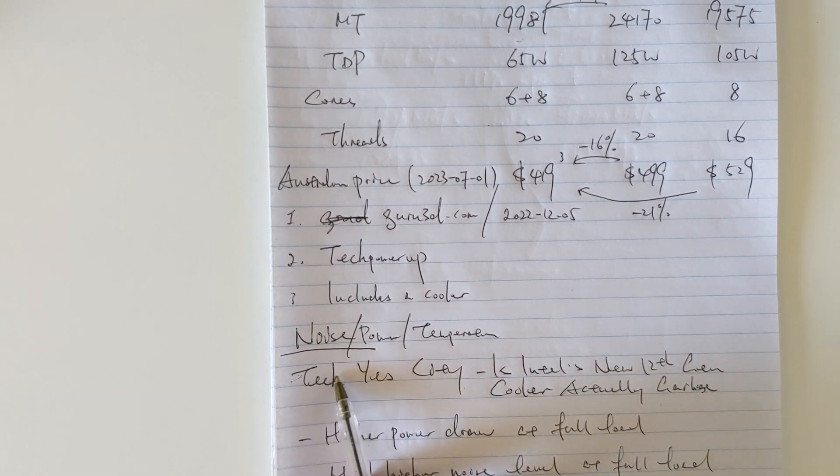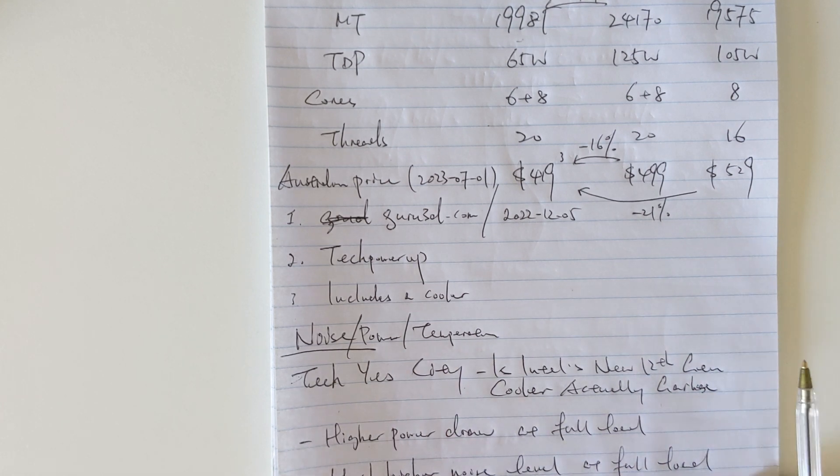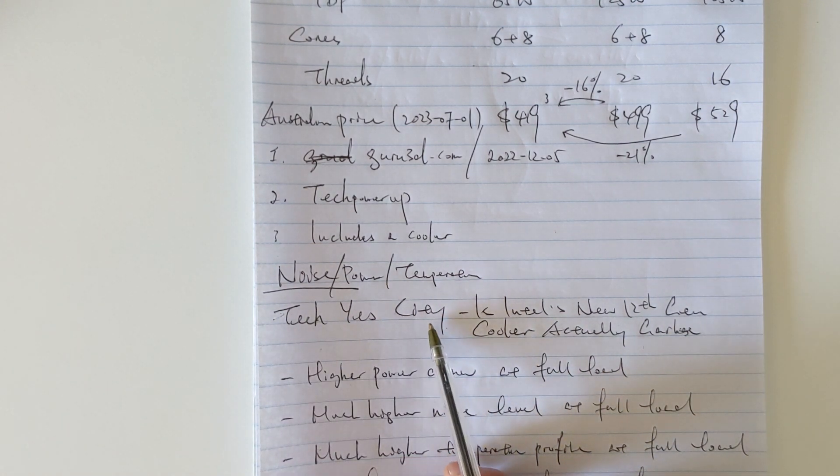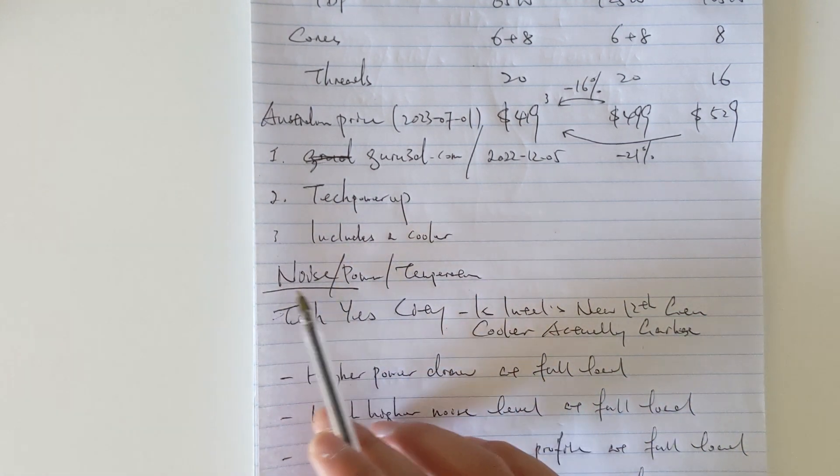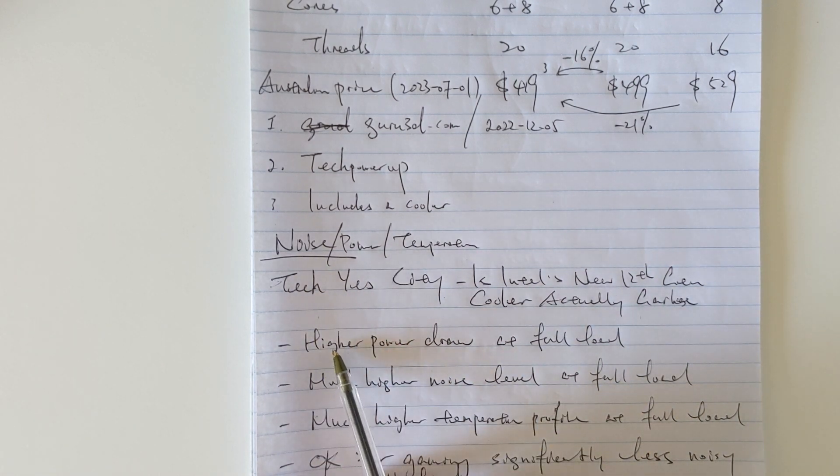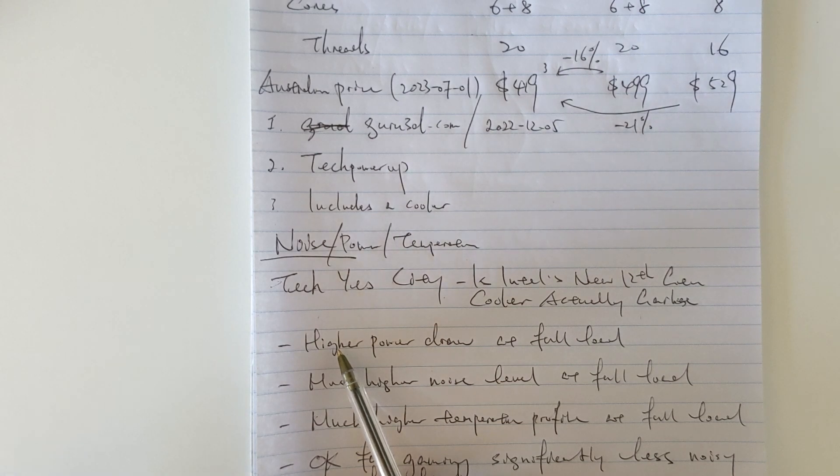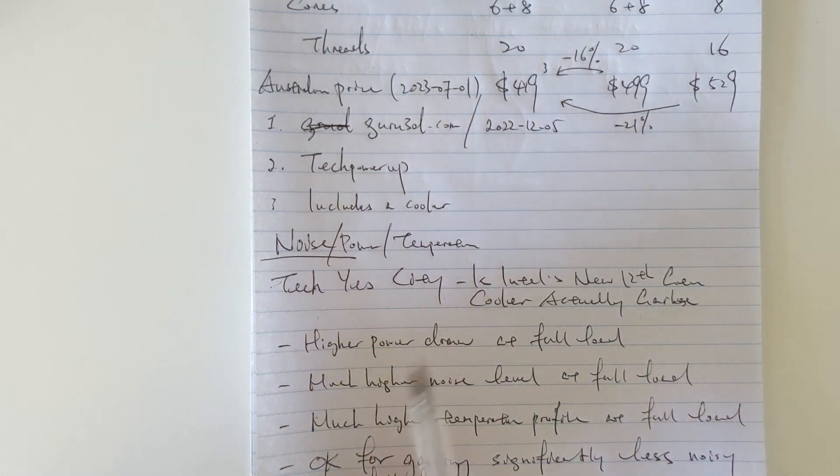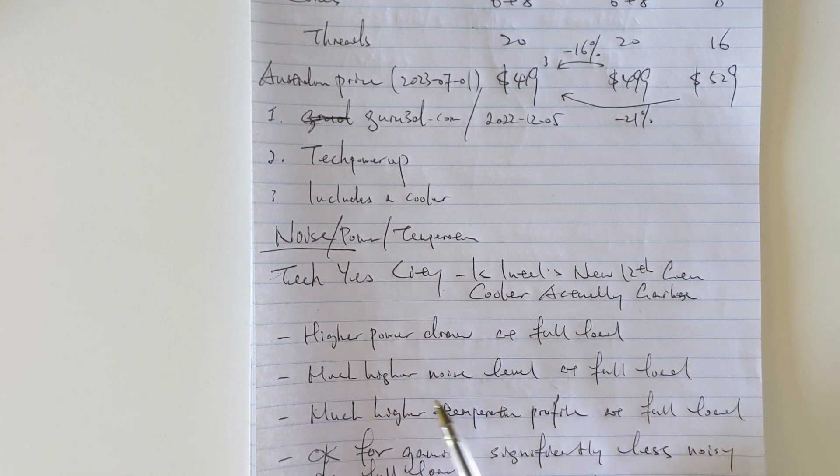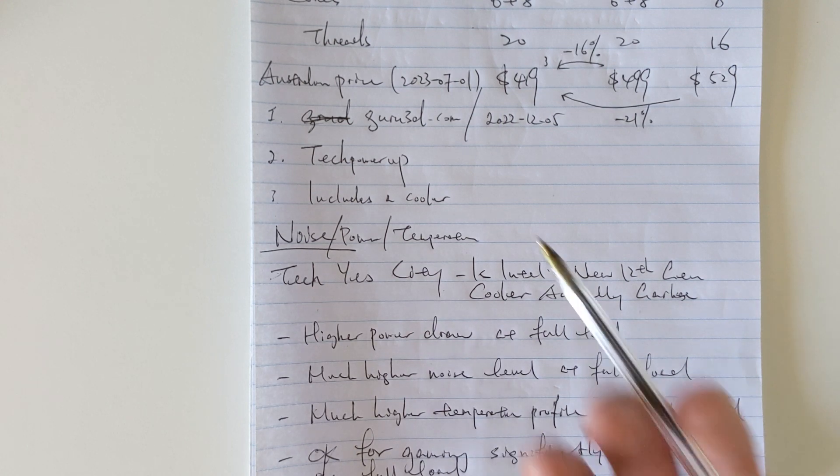Regarding the noise, power, and temperature, because I don't want to go through the trouble to try the included cooler, I just did a meta-analysis. I will put down the link of another YouTuber—his channel name is Tech Yes City—but I will summarize his findings regarding those three points. I will put his link down in my description. Basically, with the Intel cooler, if you try to run the CPU at full load, the power consumption can go higher. I think it's because when the chip is running at high temperature, the power profile is different, so it becomes less efficient. It draws much more power and also has much higher noise level at full load and much higher temperature profile at full load. That's with the stock cooler.